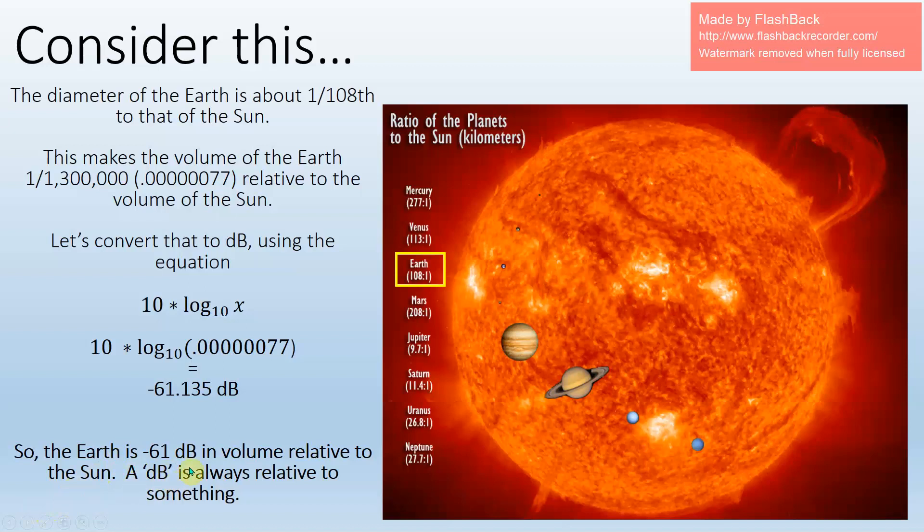So what I can say is that the Earth is minus 61 dB in relative volume to the Sun. So a dB, when all you see is the letters dB, that's always talking about a relative quantity. It's just talking about something in relation to something else. And in this case, I'm talking about the volume of the Earth relative to the volume of the Sun. Their volumes are, in relation to one another, minus 61 dB different.